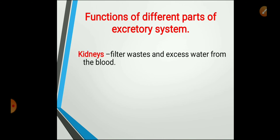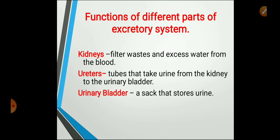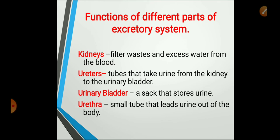The functions of the different parts of the excretory system: Kidneys — their main function is to filter waste and excess water from the blood. Ureters — tubes that take urine from the kidney to the urinary bladder. Urinary bladder — a sac that stores urine. Urethra — a small tube that leads urine out of the body.